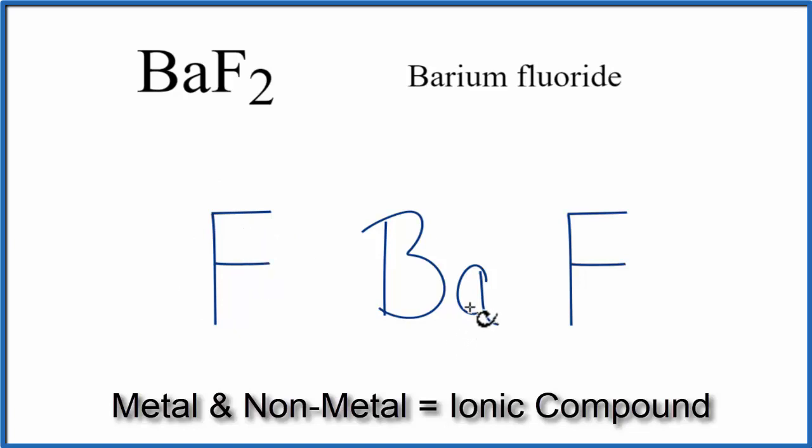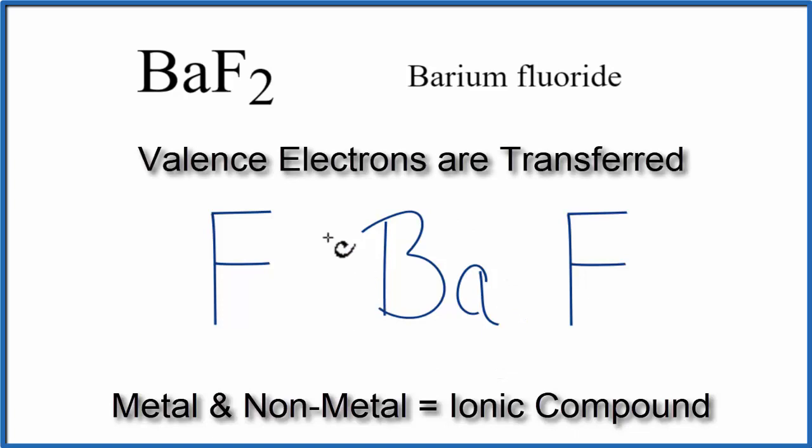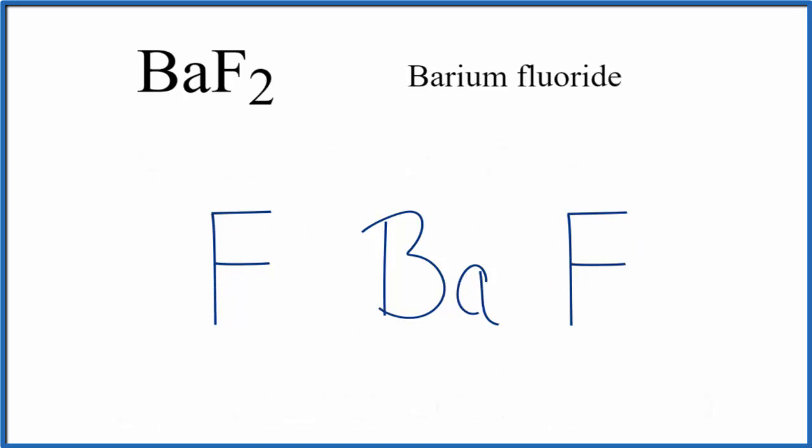With ionic compounds, the valence electrons are transferred from the metal to the nonmetal or to the nonmetals. So barium, that's in group 2 on the periodic table, it has 2 valence electrons.